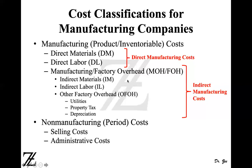Manufacturing overhead is also known as factory overhead — FOH and MOH are the same thing. Indirect material and indirect labor both go into manufacturing overhead. Other factory overhead includes utilities like telephone bills, electricity bills, water bills used in the factory, as well as property tax and depreciation on the factory building.